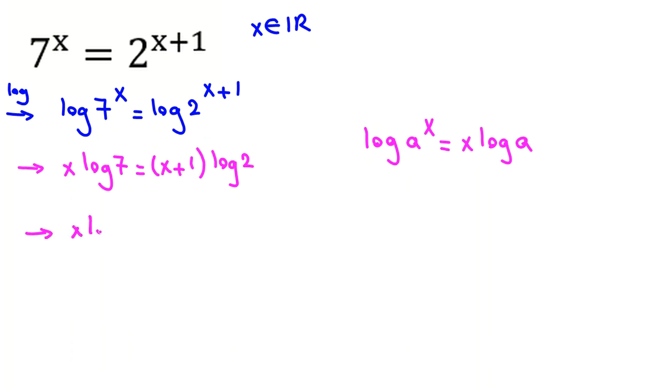Now, x log 7 equals, if we expand the right side, x log 2 plus 1 times log 2, which is log 2.